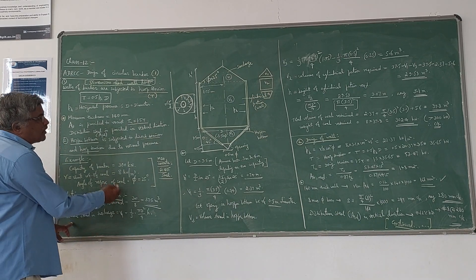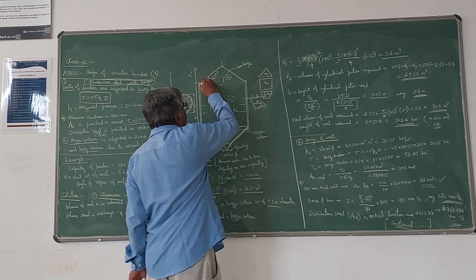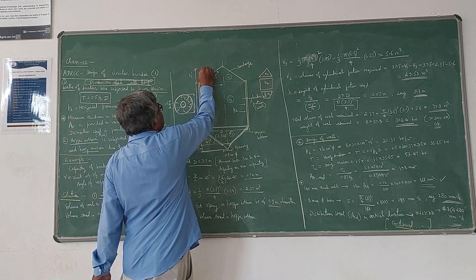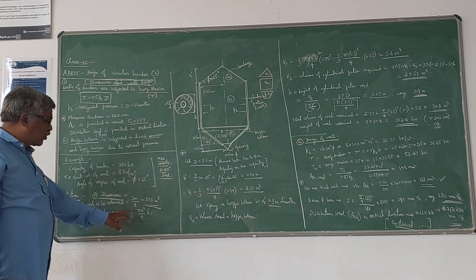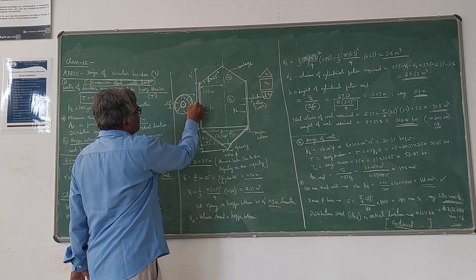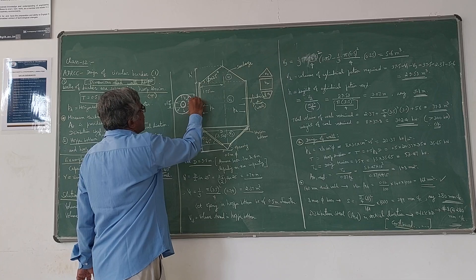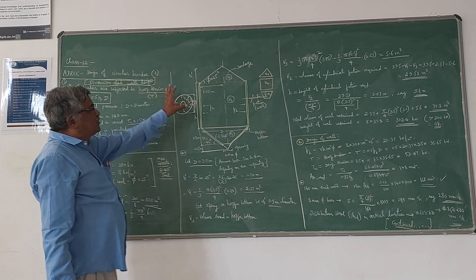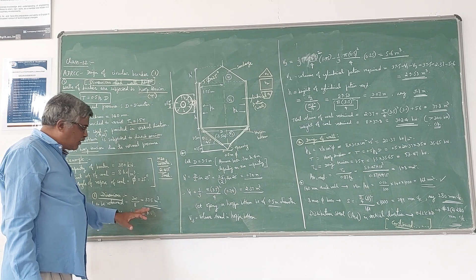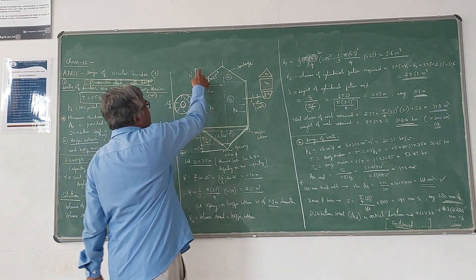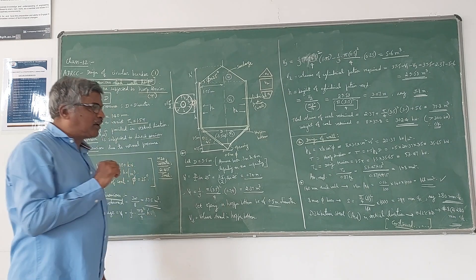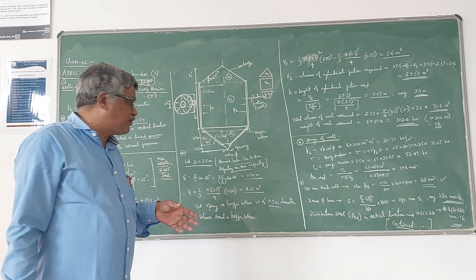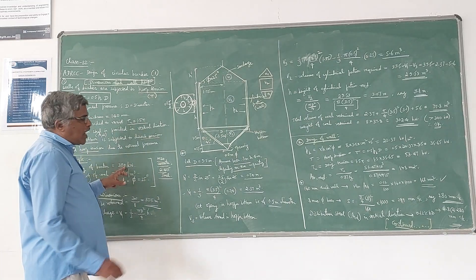For V1, the formula for volume of a cone is one-third of area multiplied by height: (1/3) × (πD²/4) × h'. The area is πD²/4, and for a cylinder it is πD²/4 × height; for a cone it is one-third of that. I am going to assume the diameter as 3.5 m. For a capacity of 300 kN, the diameter can be taken as 3 to 4 meters depending on capacity.